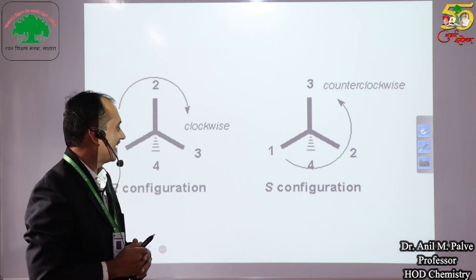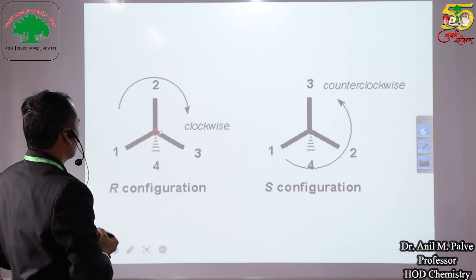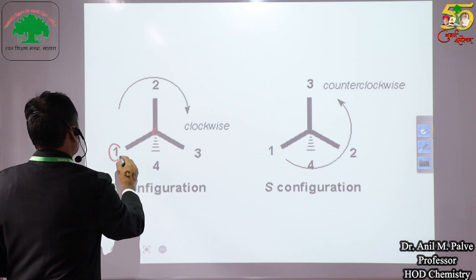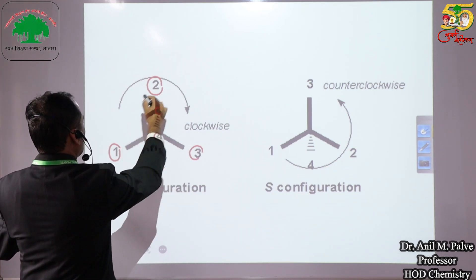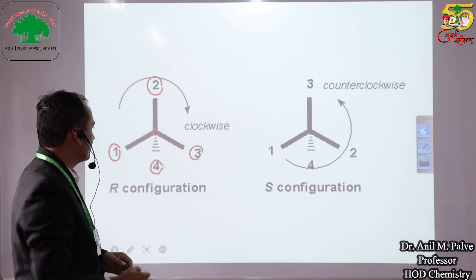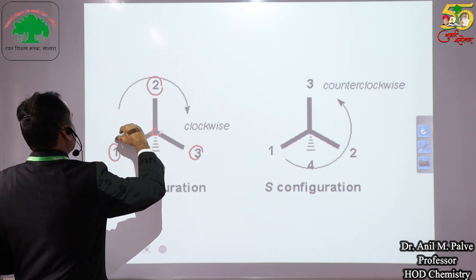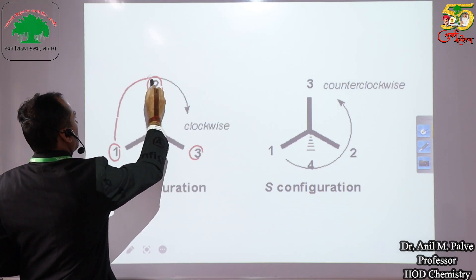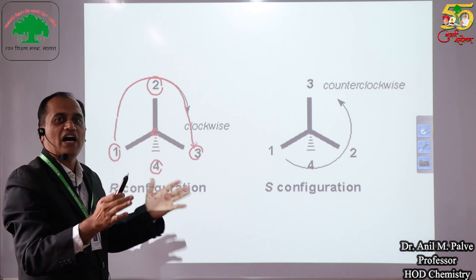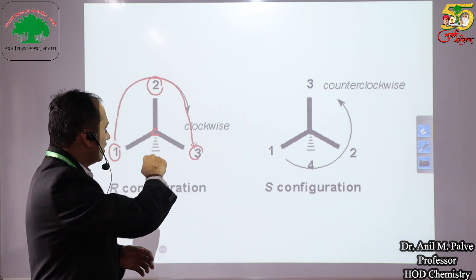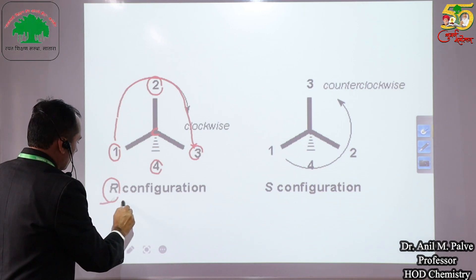Here you can see one example. At the center we have a carbon atom attached to groups with priorities 1, 2, 3, and 4. According to the rule, we trace the path from priority 1 to 2 to 3. When we look towards this path, it is noticed that it is a clockwise direction. Therefore, such a configuration is known as R configuration.